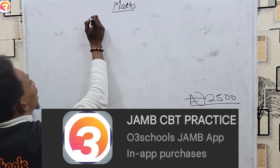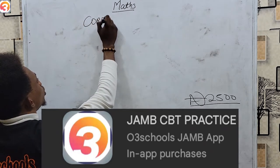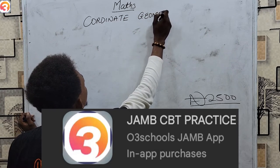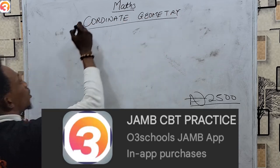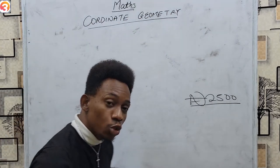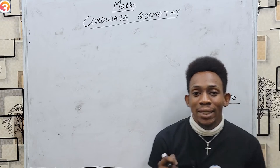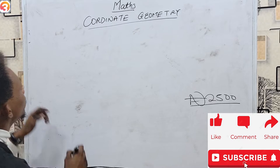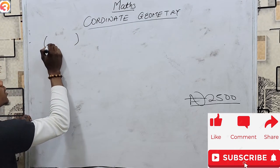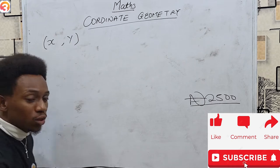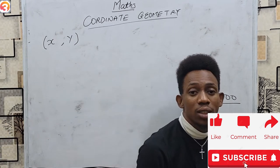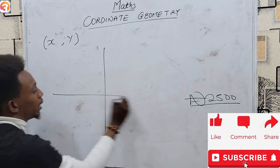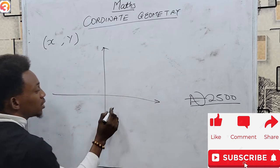In this class, we shall be looking at coordinate geometry — specifically points and lines. Coordinates are described with two numbers in a bracket. The first number always represents the x-coordinate, while the second represents the y. On a typical graph, your coordinates have a starting point which is zero. Measuring upwards and downwards is your y-axis — up is positive and down is negative. Measuring right and left is your x-axis — right is positive, left is negative.